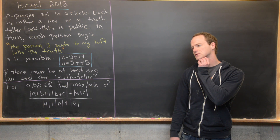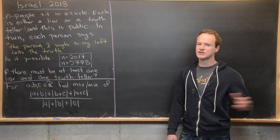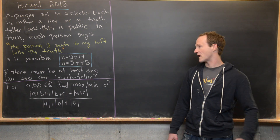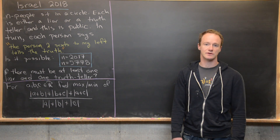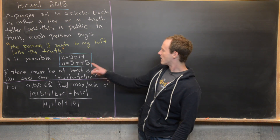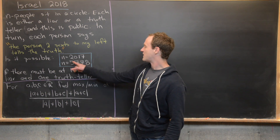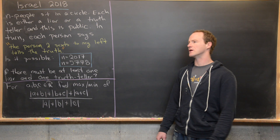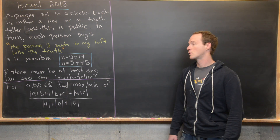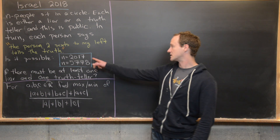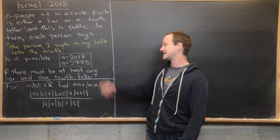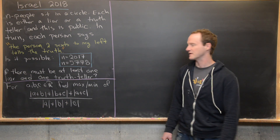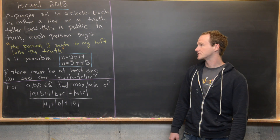The condition is not satisfied if everyone lies or if everyone tells the truth — there must be at least one liar and at least one truth teller. Also worth noting: 5778 is the Hebrew year corresponding to the standard year 2017, so there's a little game being played with the years here.